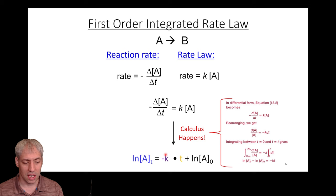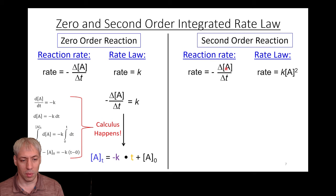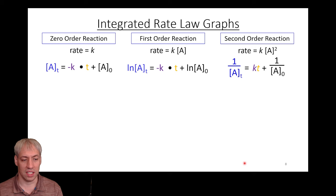You can do the same thing with the zero order reaction: rate equals negative ΔA over ΔT, and since rate equals K at zero order, the concentration term disappears. Do some calculus and you get that answer. Do the same with the second order rate — rate equals KA², so it's second order because of the squared term — do your calculus and you get that concentration-time equation. I don't expect you to do the calculus; just know that we combine the rate expression with ΔA over ΔT and do some calculus to get these more convenient forms.